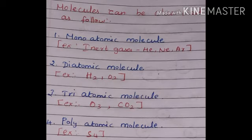A molecule containing more than three atoms is known as a polyatomic molecule. Examples are phosphate and sulfur.